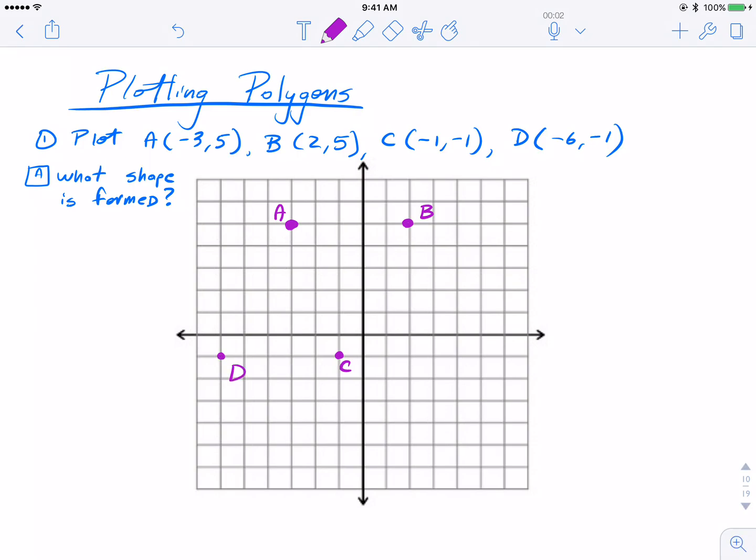Now we're going to play connect the dots like I said earlier. You want to connect these in order, so A to B to C to D and then close it out. So we see we have a nice polygon formed here, it's a quadrilateral more specifically.